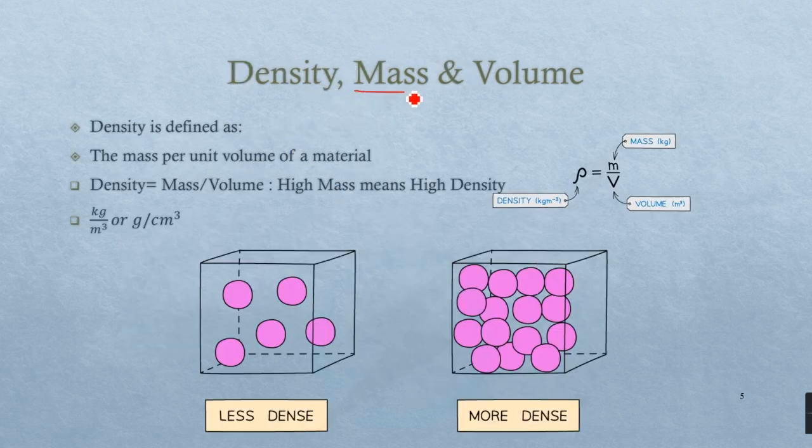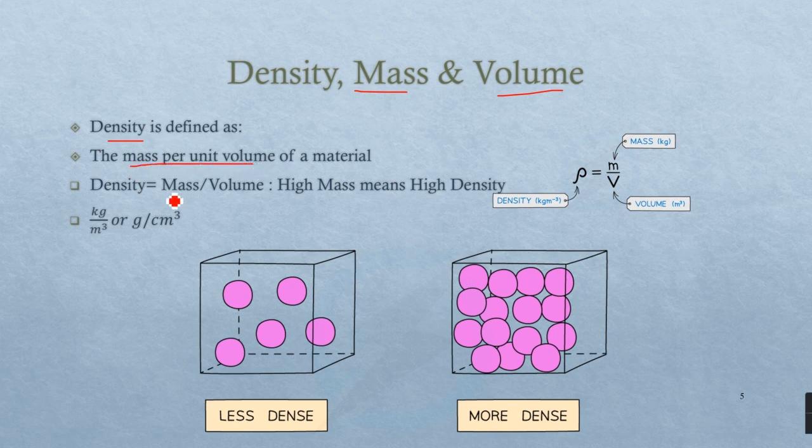Now once we have the mass and the volume, we can use the formula to find the density, as density is defined as mass per unit volume, or mass divided by volume, where we know that the increase in mass will increase the density of an object. The unit for density is kilograms per meter cubed or grams per centimeter cubed.